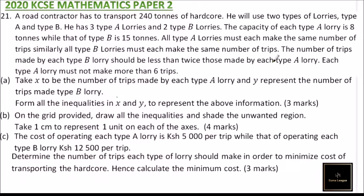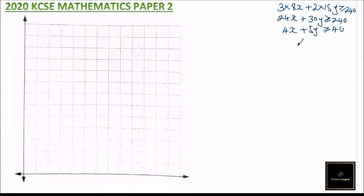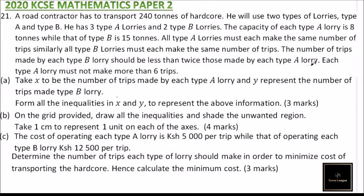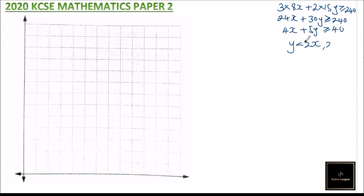The second inequality: we are told the number of trips made by each type B lorry must be less than twice the number made by each type A lorry. So Y < 2X. The third inequality: each type A lorry must not make more than 6 trips, so X ≤ 6. And of course, X > 0 and Y > 0.